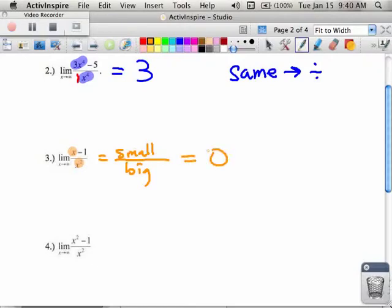So whenever you have a small power over a big power, the answer is always going to be zero. That's rule number two. Small over big powers give you a limit of zero. Again, these rules only work when you're going to infinity for the x's.